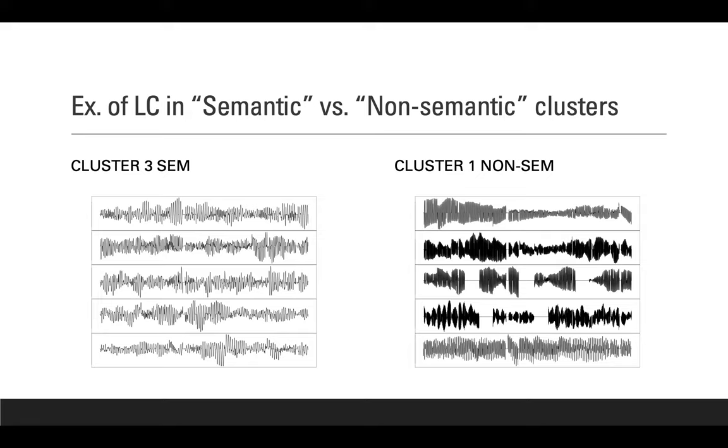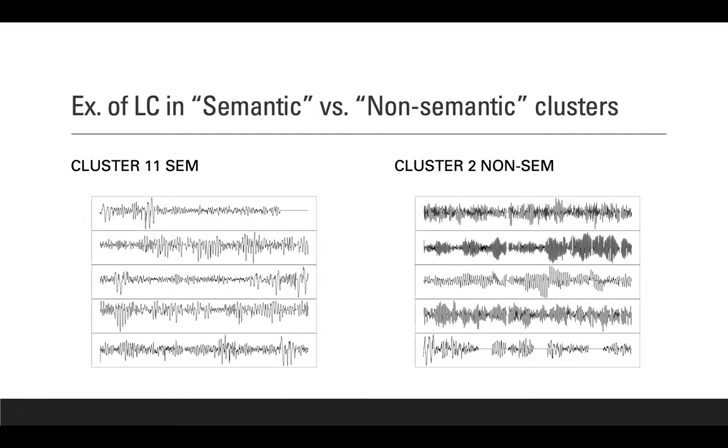Here are some examples of different clusters between the semantic and non-semantic methods we used on the light curves. In this example, we have cluster three, for instance, from the semantic method we used on the left, and on the right cluster one from the non-semantic or KS method. Here is another example from cluster 11 in the semantic method on the left and cluster two from the non-semantic method on the right.